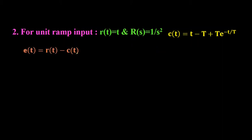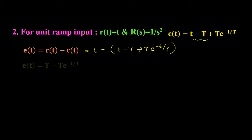Now we find the error. The error e(t) = r(t) − c(t). For unit ramp input r(t) = t, so e(t) = t − (−T + t + T·e^(−t/T)). Solving this, the error e(t) = T − T·e^(−t/T).